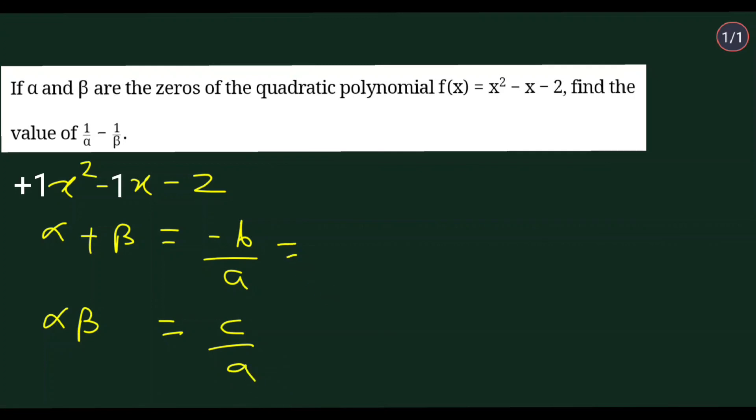Minus b by a is minus of b which is minus 1, so it is minus 1. And a is 1, so this will become 1. And c by a, c is minus 2 and a is 1, so this is minus 2. So alpha plus beta and alpha beta, these relations we have.